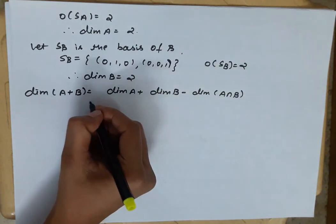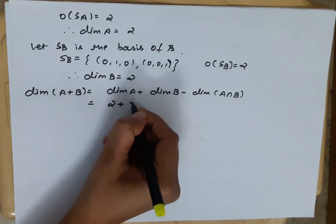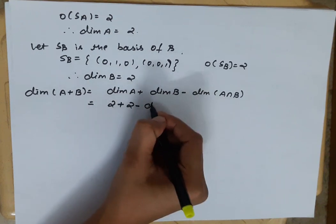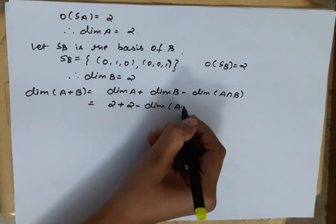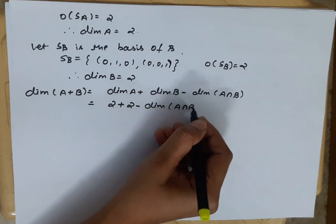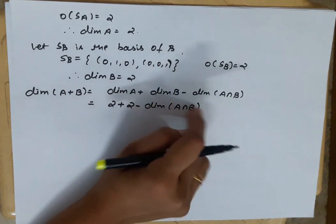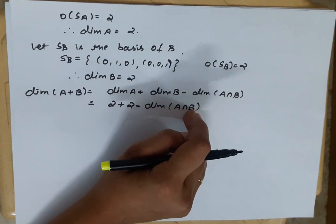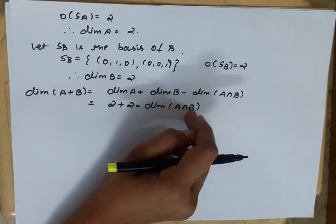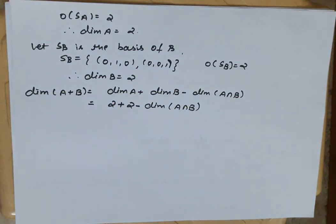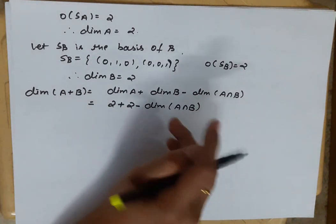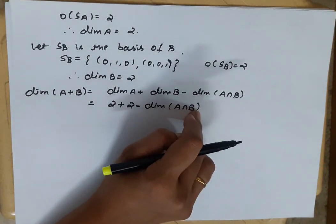Now, we know from the theorem that the dimension of A plus B is equal to the dimension of A plus the dimension of B minus the dimension of A intersection B. We know dim(A) = 2 and dim(B) = 2, but we have not yet calculated A intersection B. So first we calculate A intersection B and find its basis, then count the elements to get the dimension of A intersection B.